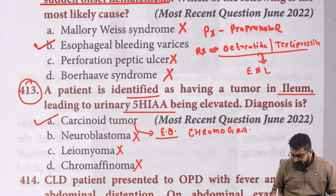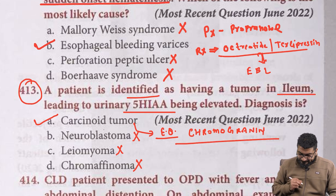To summarize carcinoid markers: in blood, diagnose with chromogranin; in urine, diagnose with 5-hydroxyindoleacetic acid (5-HIAA).